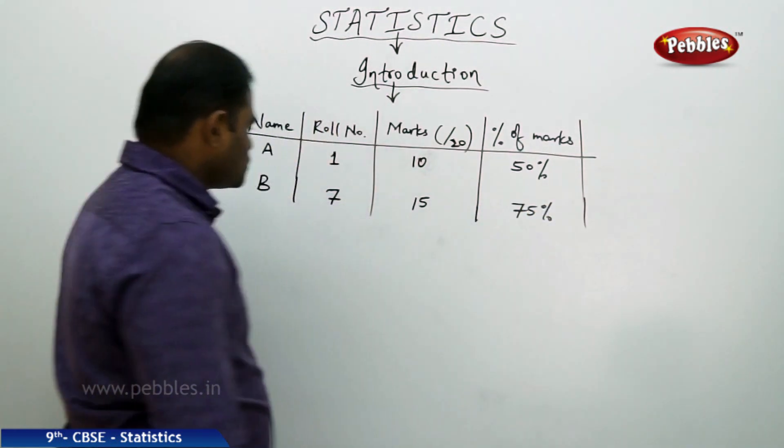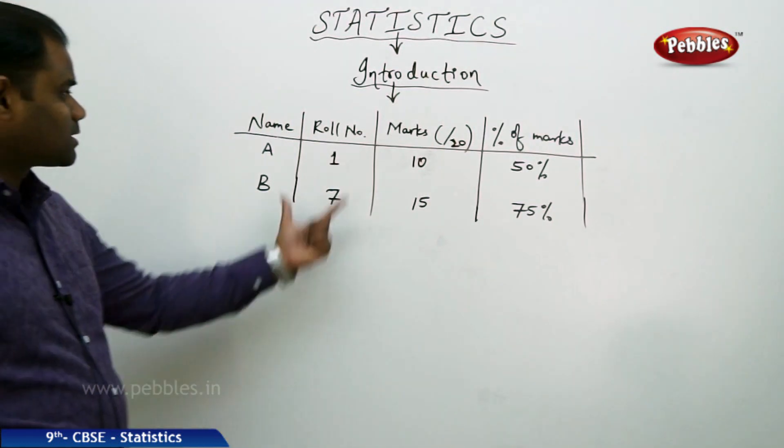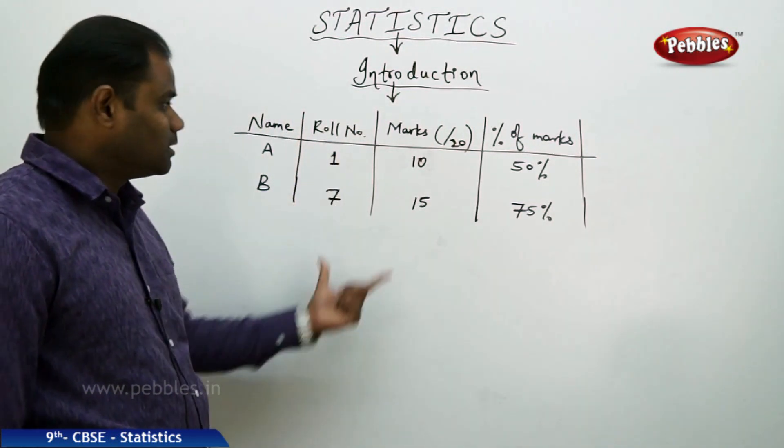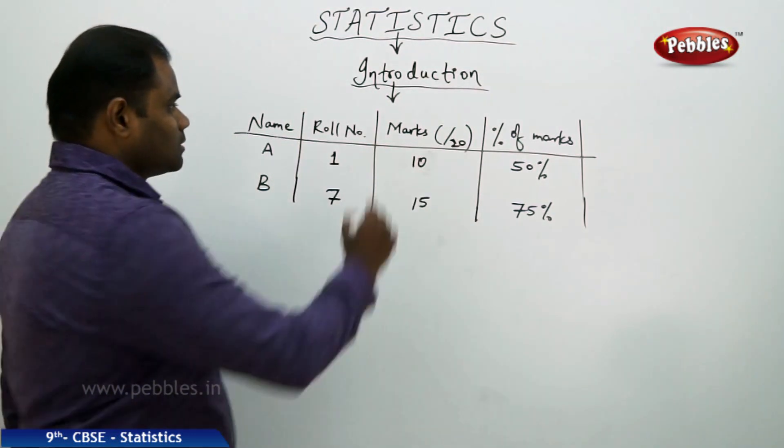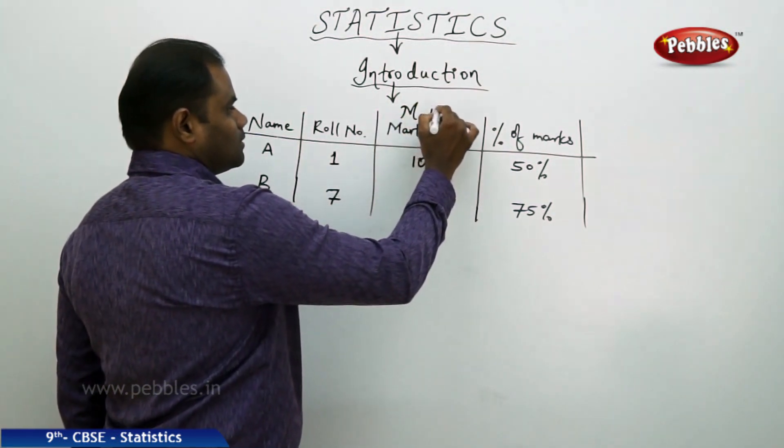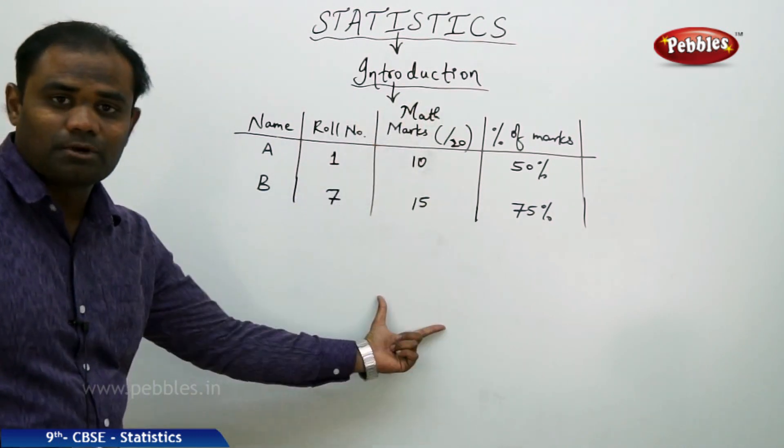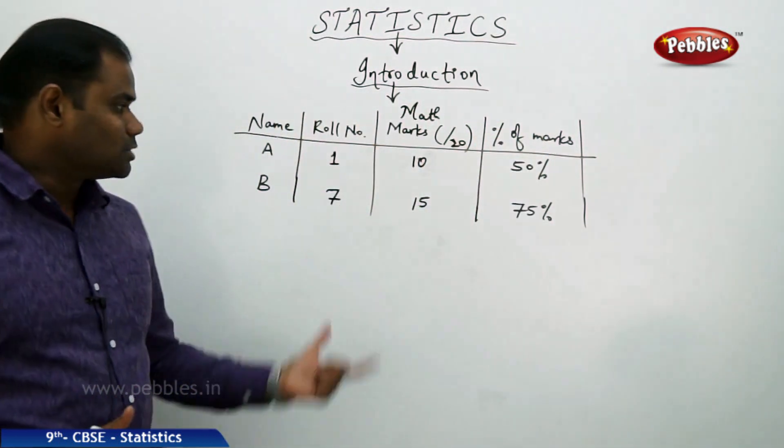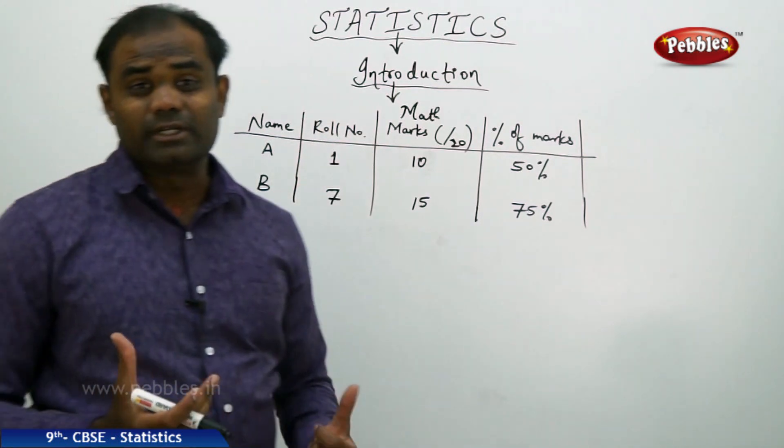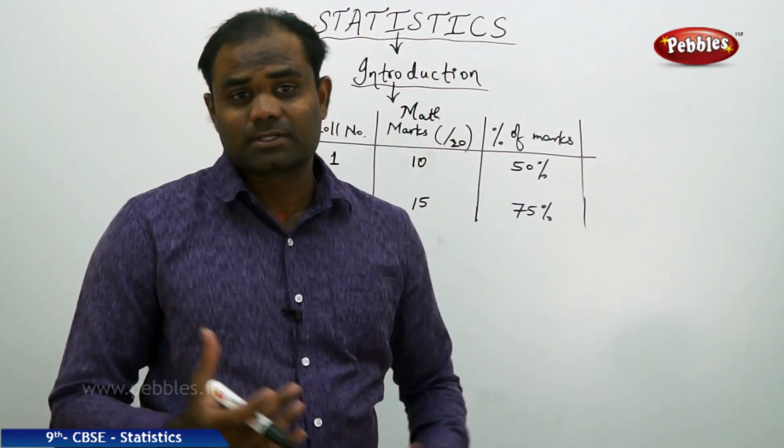This collection of names, their respective roll numbers, their marks obtained for 20 marks in the math subject, and the percentage of those marks is what the teacher usually does before they prepare the progress card.